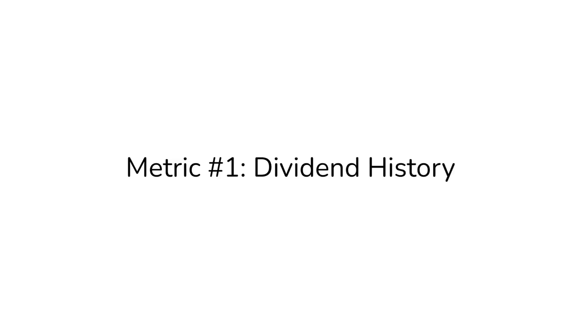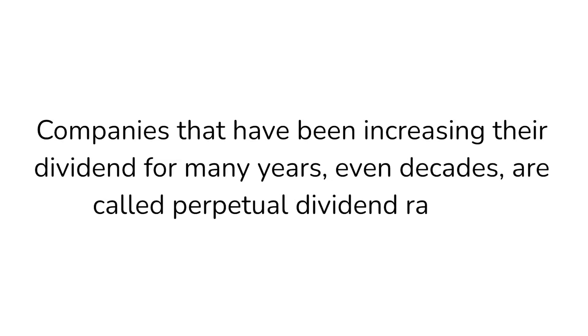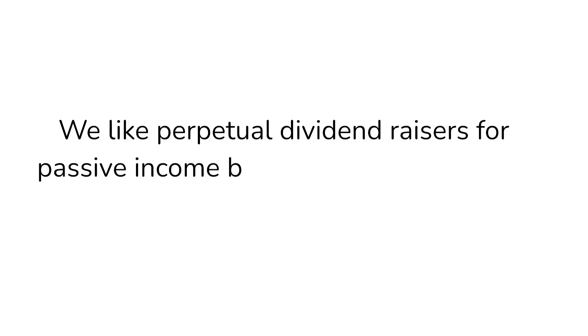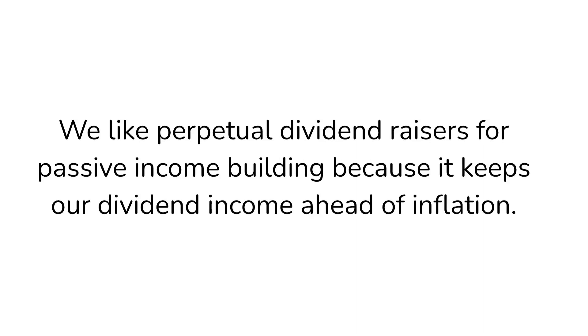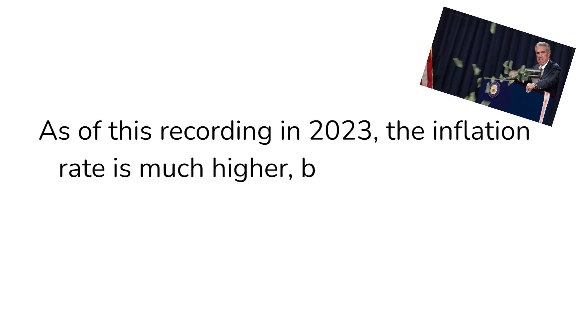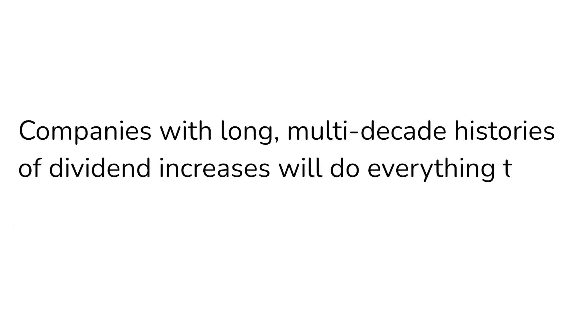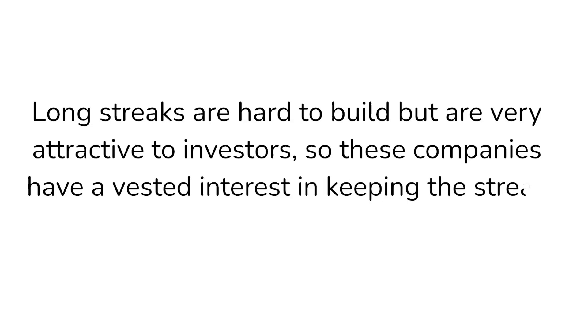The first metric we want to look at is dividend history. The total length of time a company has been paying a dividend is important, but the length of dividend increase is far more significant. Companies that have been increasing their dividend for many years, even decades, are called perpetual dividend raisers. We like perpetual dividend raisers for passive income building because it keeps our dividend income ahead of inflation. Historically, inflation has been eroding purchasing power at about 2 or 3% per year. Companies with long, multi-decade histories of dividend increases will do everything they can to continue to raise their dividend, as dividend growth is very attractive to investors.